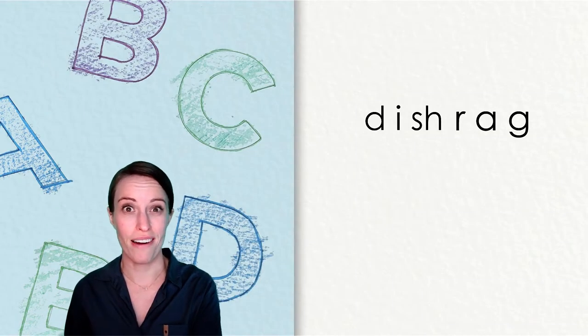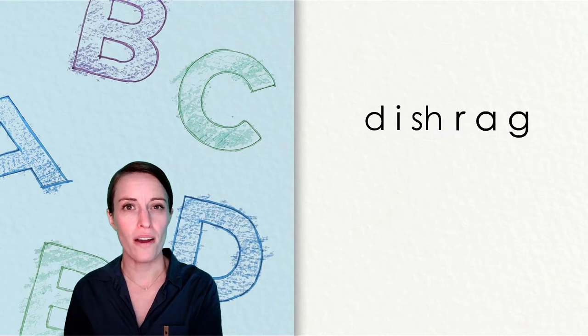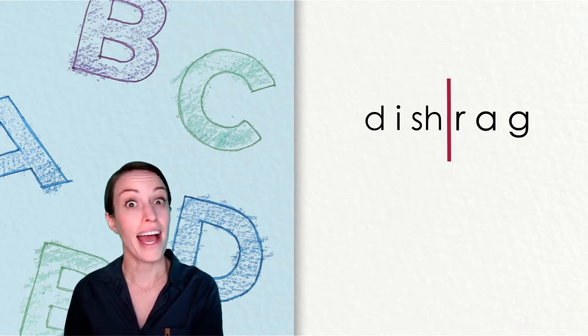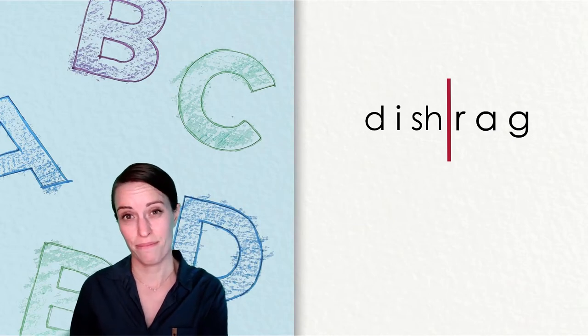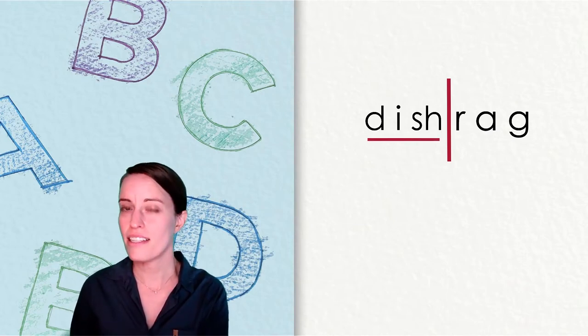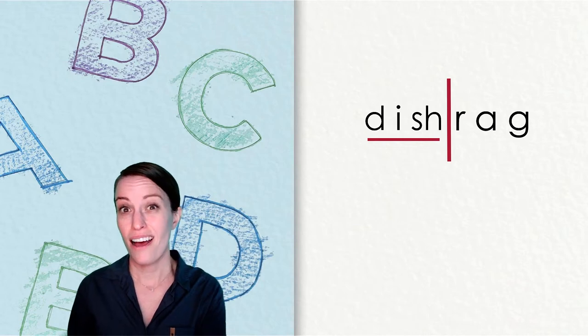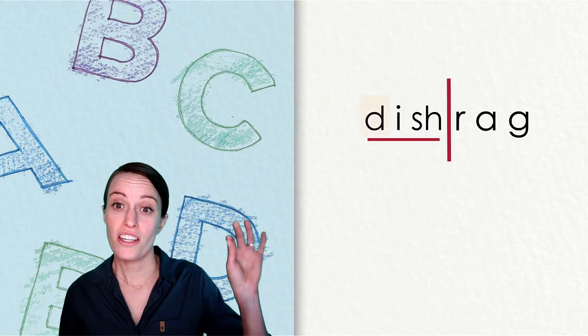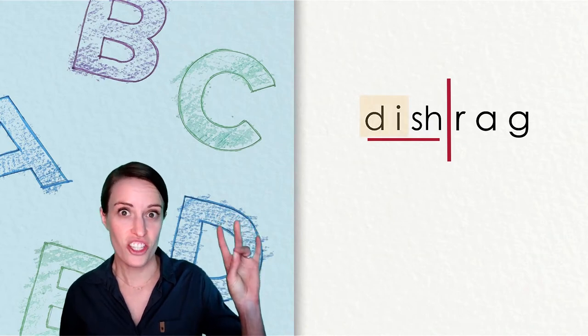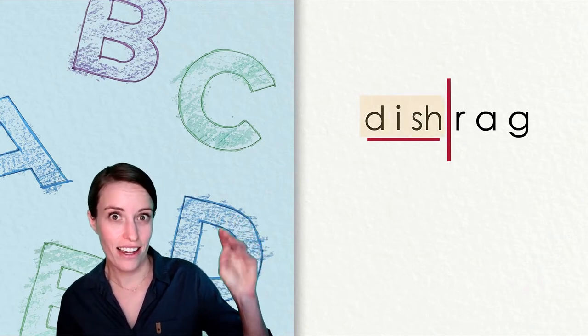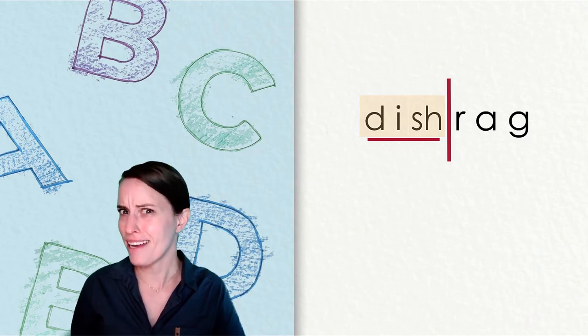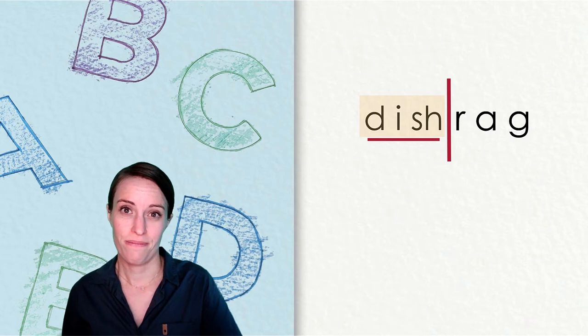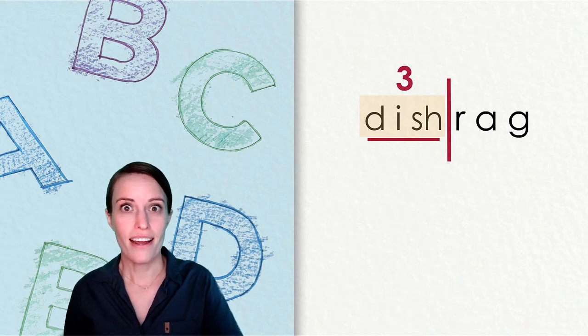Here is our first word and it is a word with two syllables. Let's look at each syllable at a time. Here is the first syllable. Let's tap out the sounds in this syllable together. You've got it. How many sounds did you hear in the word dish?